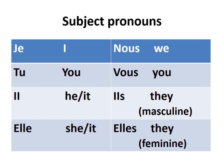Nous means we, Vous means you, Ils means they for masculine, and Elles means they for feminine. Now children, these pronouns are written in a particular order and you have to keep that order in mind: Je, Tu, Il, Elle — Nous, Vous, Ils, Elles. When we learn conjugation, I will tell you how to use this order.